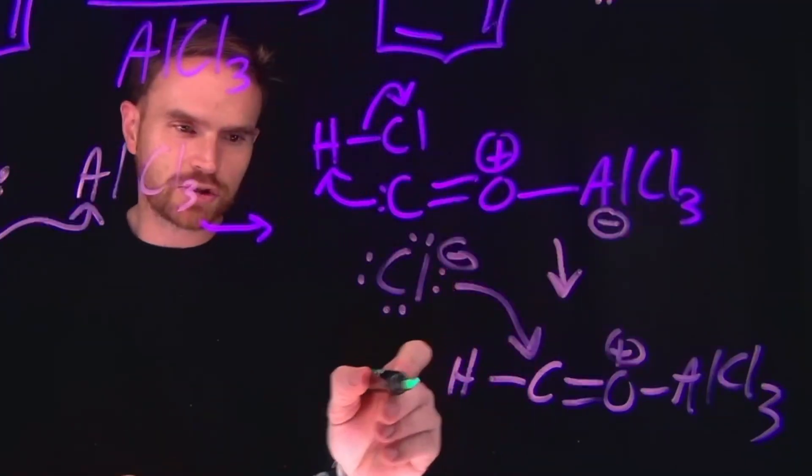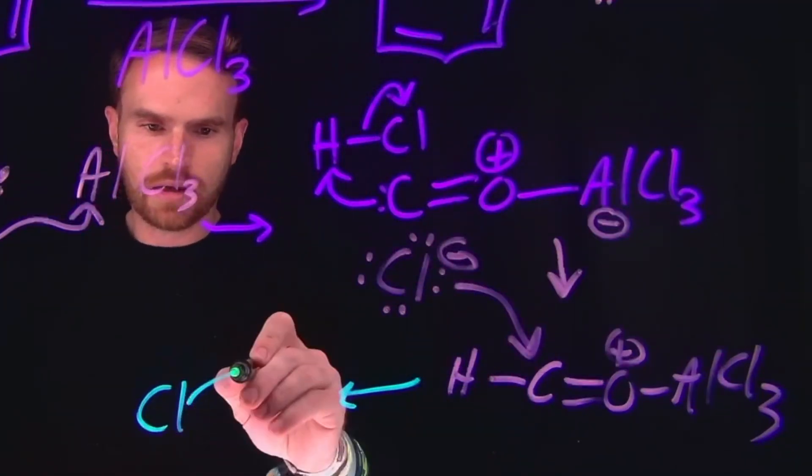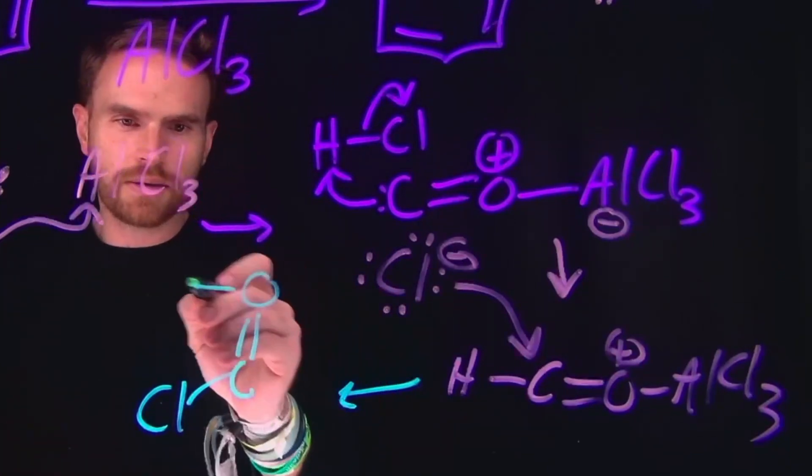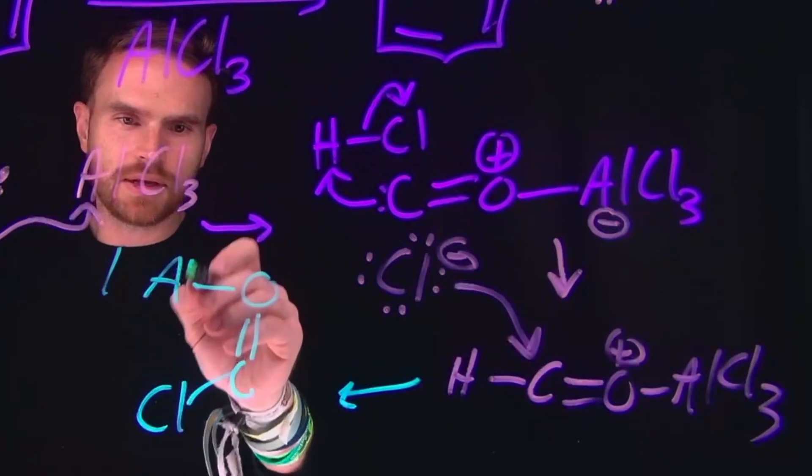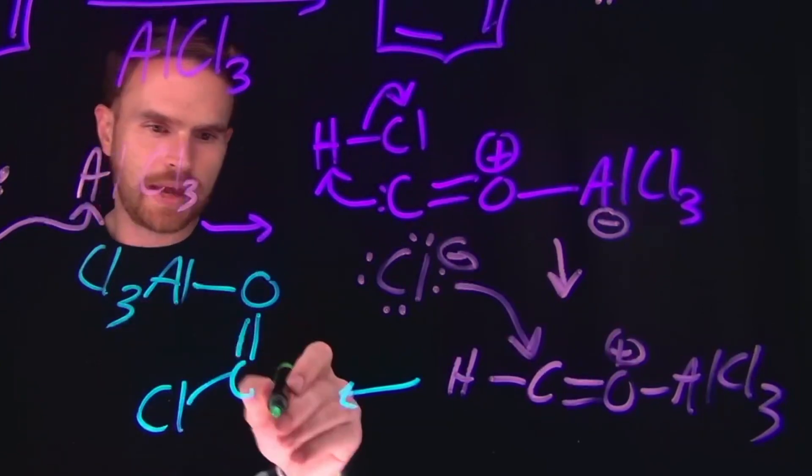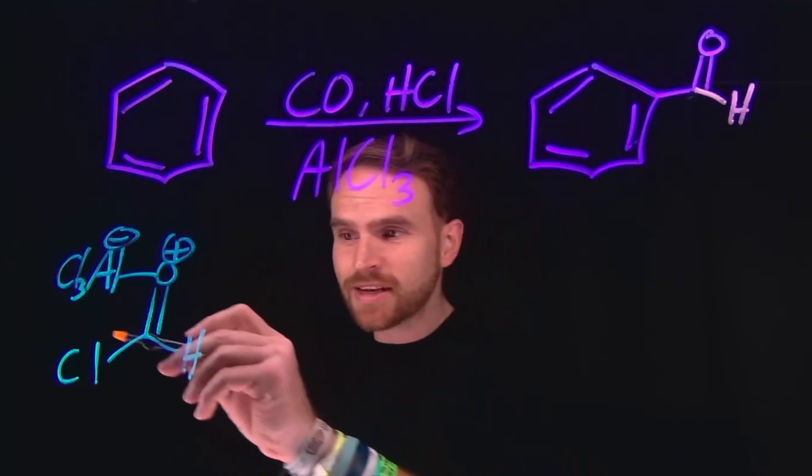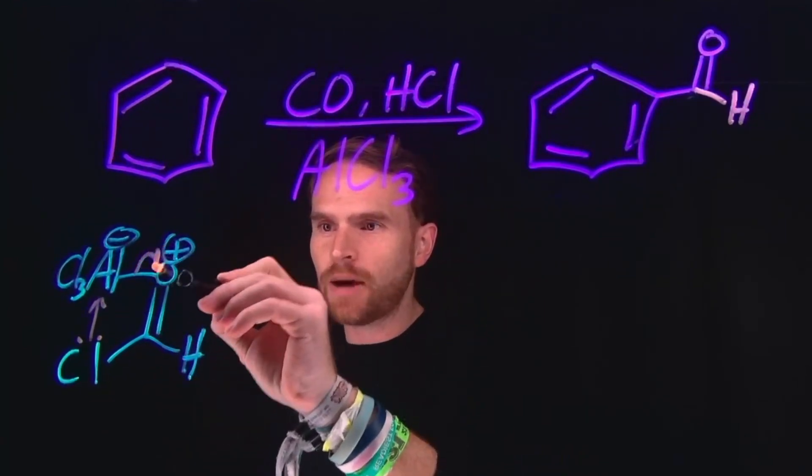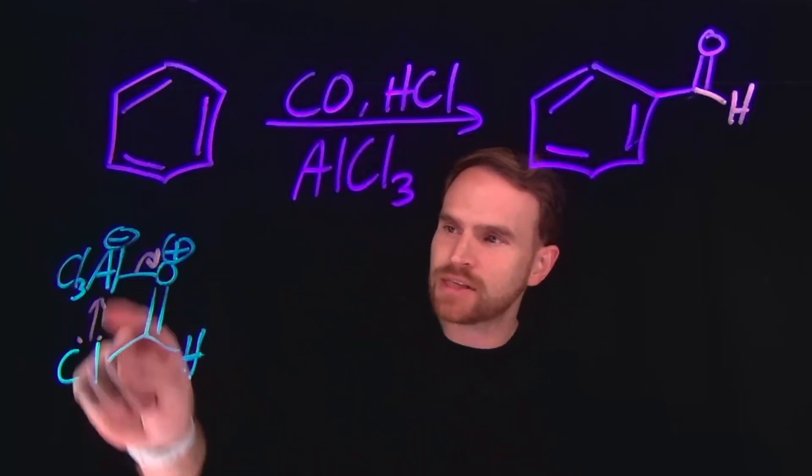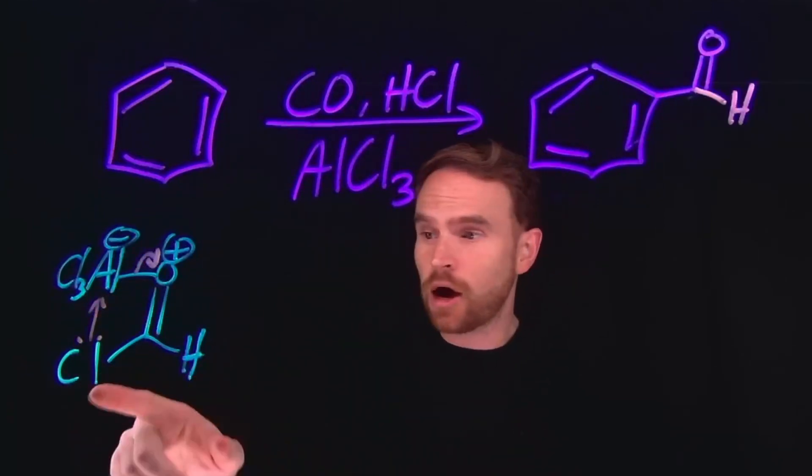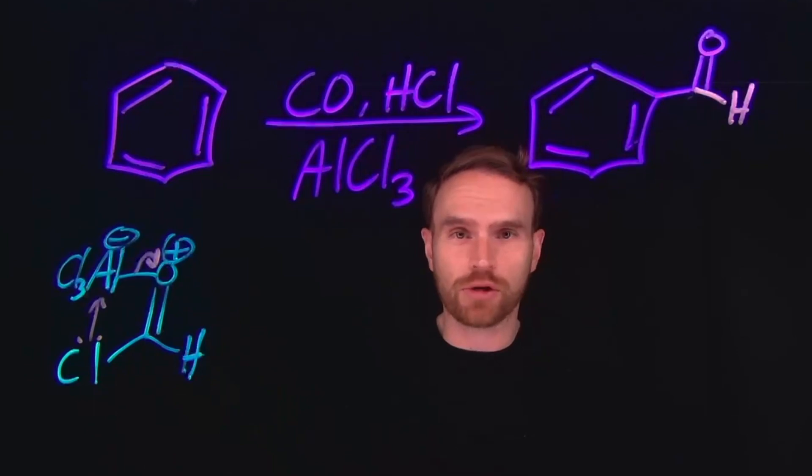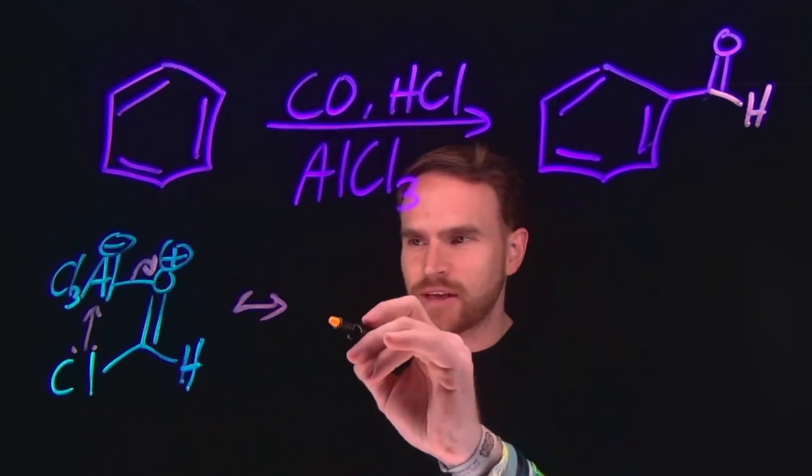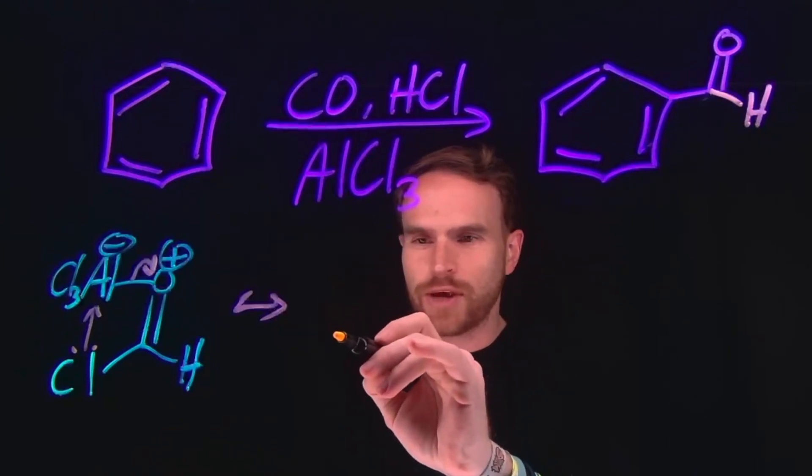And the product of this transformation starts to look like this, where we have our carbon, effectively a carbonyl portion. We have the aluminum trichloride, and then we now have a hydrogen here. And this activated complex can actually interconvert, where we will free up the oxygen aluminum bond and now this aluminum will be attached to the other chloride as a part of this portion of the compound.